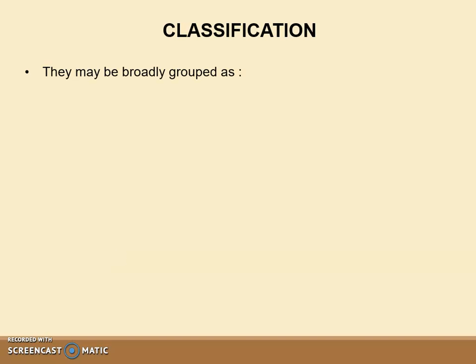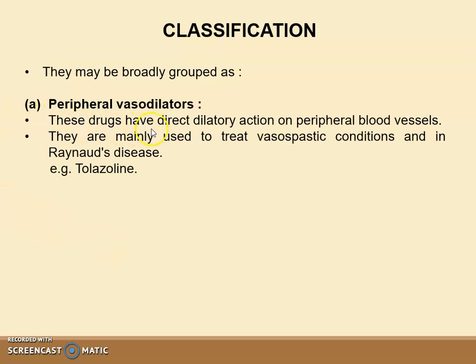Now let's start with classification. Vasodilators may be broadly grouped as: first, peripheral vasodilators. These drugs have direct dilatory action on peripheral blood vessels. They are mainly used to treat vasospastic conditions and in Raynaud's disease. For example, tolazoline.